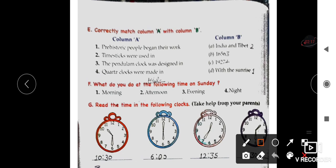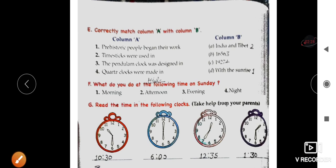Number 3: The pendulum clock was designed in 1656 - Option B is correct. Number 4: Quartz clocks were made in 1927 - Option C is correct.